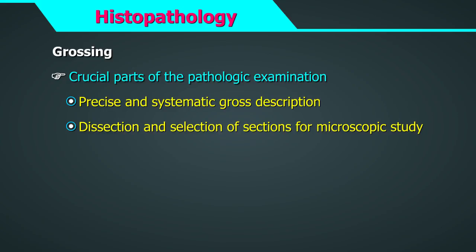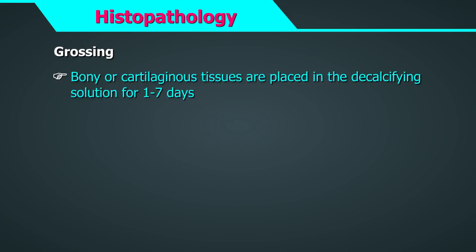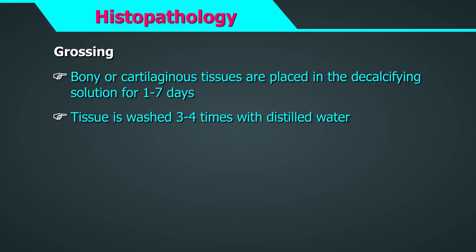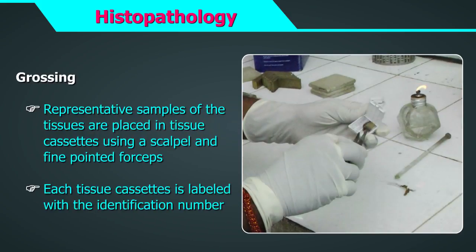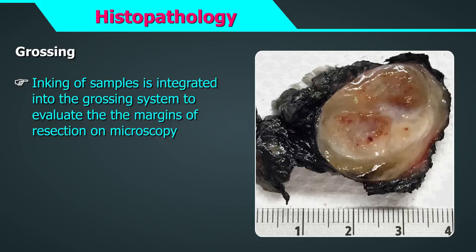Precise and systematic gross description, dissection, and selection of sections for microscopic study are crucial parts of pathologic examination and often cannot be remedied if omitted or done poorly at initial workup. This should be done by a pathologist having reasonable skill in histopathology and should not be left to the technical staff. Bony or cartilaginous tissues are placed in decalcifying solution for one to seven days. The tissue is washed three to four times with distilled water. Number of bits received must be noted, especially in small biopsies. Representative samples are placed in tissue cassettes using a scalpel and fine pointed forceps. Each tissue cassette is labeled with the identification number.